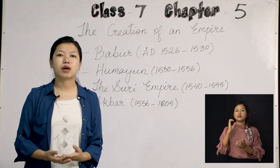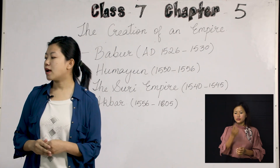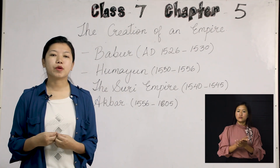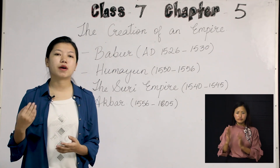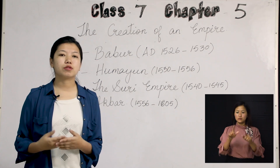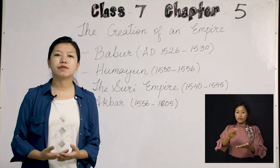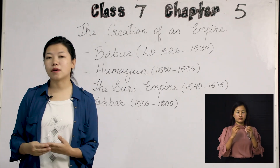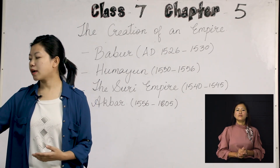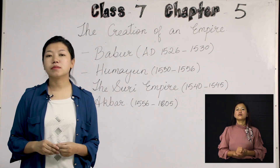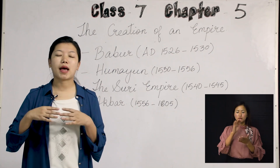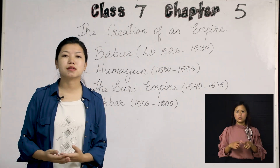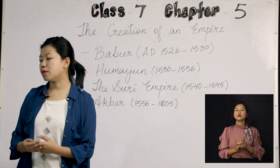Coming to the agrarian system — Akbar also gave loans to certain farmers who needed to do agricultural work. For example, if a farmer needed land or money to start farming, he would give them loans, and in return these people paid him back on an installment basis. These were called takavi loans. Raja Todar Mal was the minister of his agrarian system. This man looked after all the agrarian matters — all the land, taxes, and loans — and was responsible for all these things.